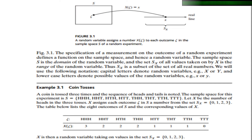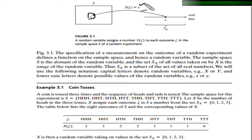The same concept is shown in this diagram: the sample space contains an outcome zeta, which is mapped to a numerical value by X, the random variable. These values come from the set S_X.